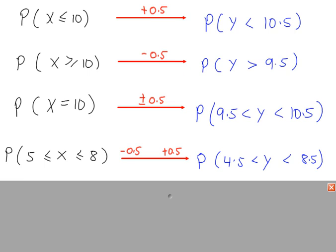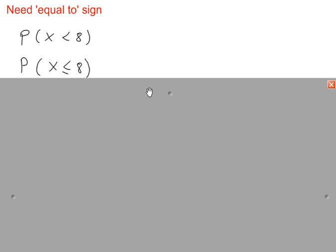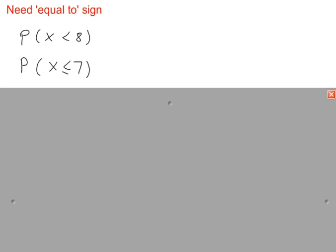As an example, we're working out the probability that x is less than 8. Less than 8 is the same as less than or equal to 7.